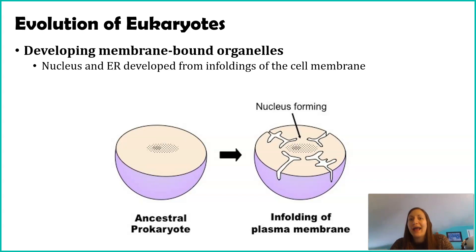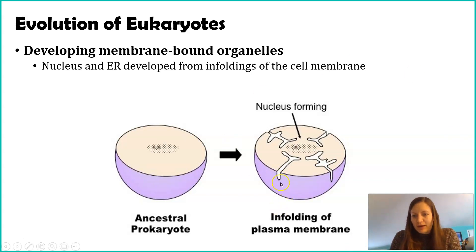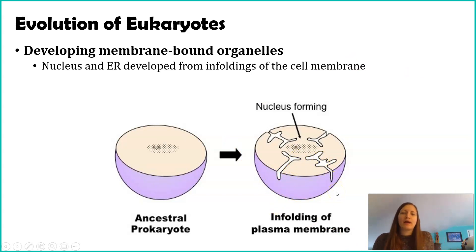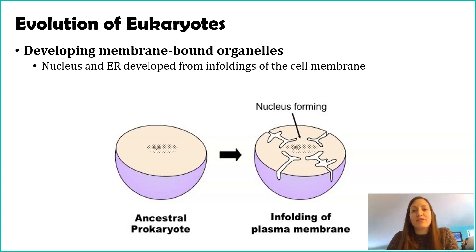The infolding could have been accidental — something in the environment may have caused it — or it could have been a mutation that caused random divots in the plasma membrane. It's hard to mimic this in the lab, but scientists think the plasma membrane folded in, surrounding the nucleus or surrounding protein and fat synthesis in the endoplasmic reticulum. Evidence for this is that the membranes around the nucleus and ER are structurally very similar to the exterior plasma membrane.